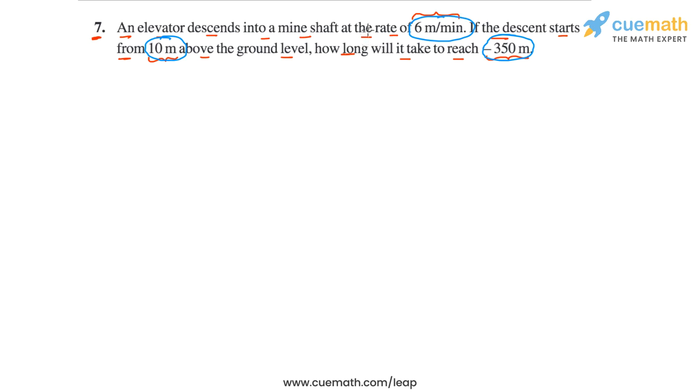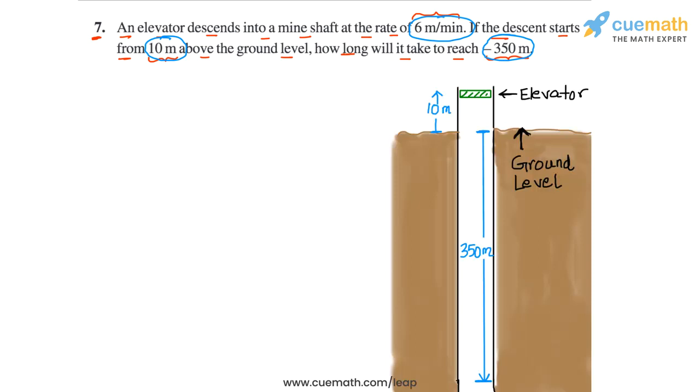Let's solve this problem step by step using the concept of integers. Here's a figure that I have drawn which will help you visualize the situation better. This green thing that you see here is the elevator. This is initially 10 meters above the ground and it has to go all the way to 350 meters below ground, and this level here is the ground level. So this is how you can visualize the given situation.